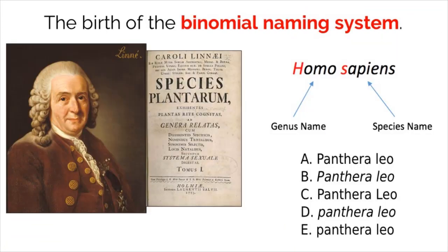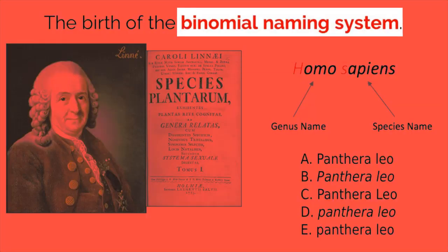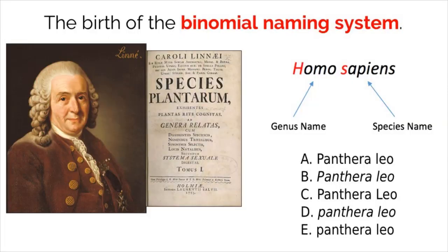In order to provide consistency among taxonomists, which are scientists that classify and group organisms, there is one method of naming that all scientists use. This binomial naming system was created by Carl Linnaeus, a Swedish botanist who lived in the 18th century.